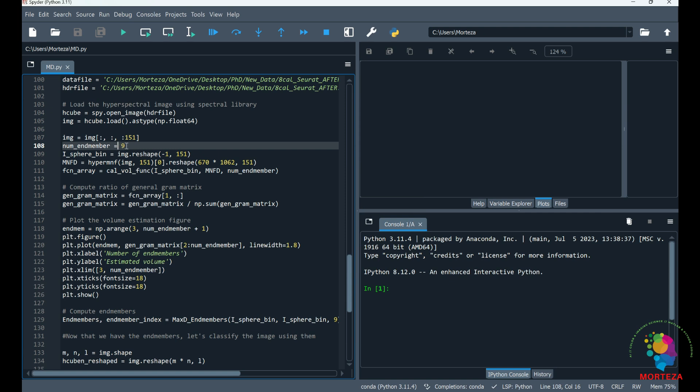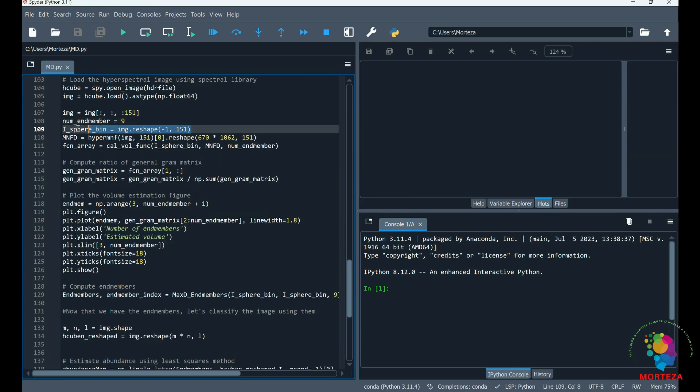Or you might need two more or three more, or you put 12. But if you put nine and the volume is zero on the plot, that means you don't have nine end members and it must be lower than nine. So you just have to check the volume of the linearly independent end members, which I'm going to show you in a minute.